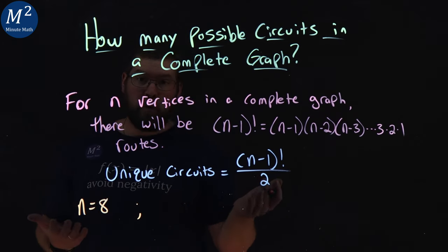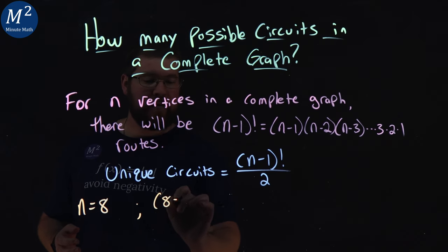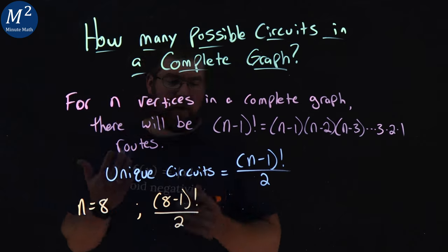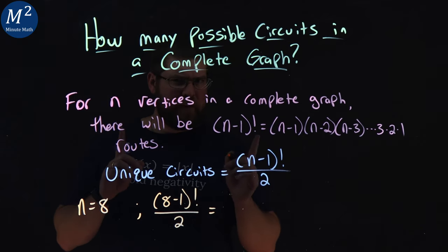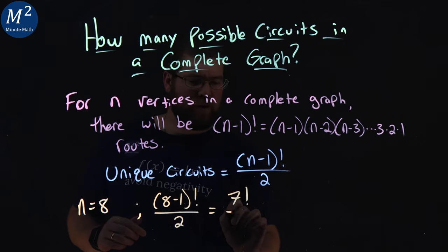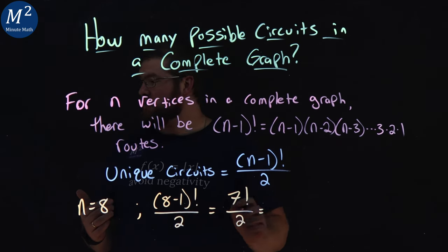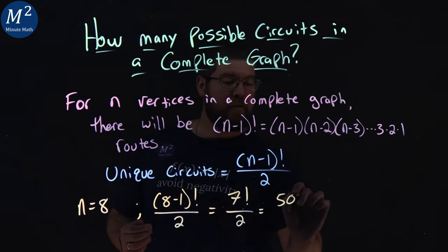Well, what we want to do is use our formula here. We have 8 minus 1 factorial over 2. Now, 8 minus 1 is 7. Be careful with this. 7 factorial over 2. And 7 factorial comes out to be 5040.